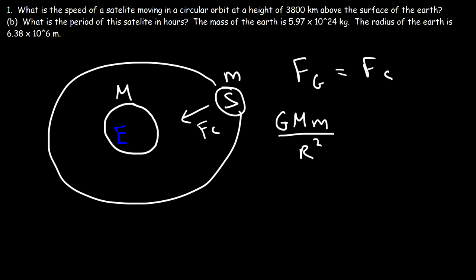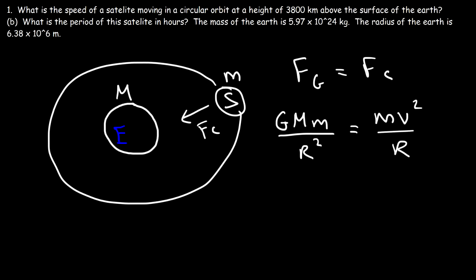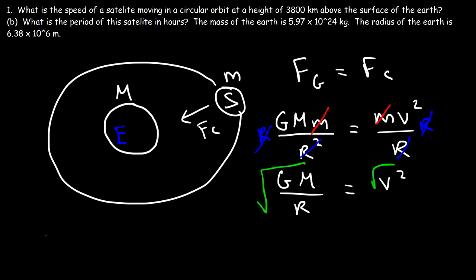The gravitational force is divided by the square of the distance between the centers of the Earth and the satellite. The centripetal force acting on the satellite is the mass times the square of the speed divided by the radius. We can cancel m, and if we multiply both sides by R, we can cancel an R, leaving GM over R equals V squared. Taking the square root of both sides, the speed of a satellite is the square root of the universal gravitation constant times the mass of the Earth divided by the distance between the centers.